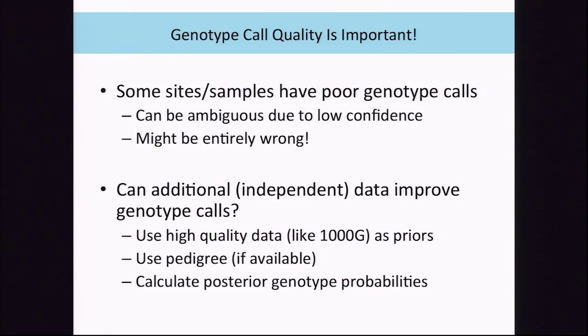The bad news is that the genotype calls from the haplotype caller directly are not always reliable. There'll be a small subset with low quality—ambiguous calls—and an even smaller subset that are flat out wrong. What we want to do is use independent data in the form of allele frequency from a large cohort like 1000 Genomes, or orthogonal sequencing data from family members such as the parents of the sample in question, to apply priors and get better posterior genotype probabilities.